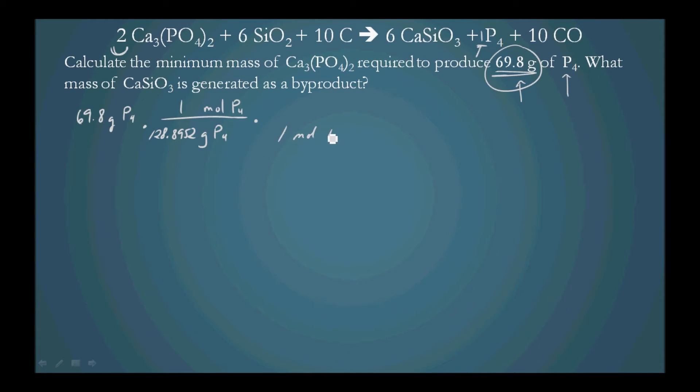So for 1 mole of P4, we require, based on the coefficients, 2 moles Ca3(PO4)2.